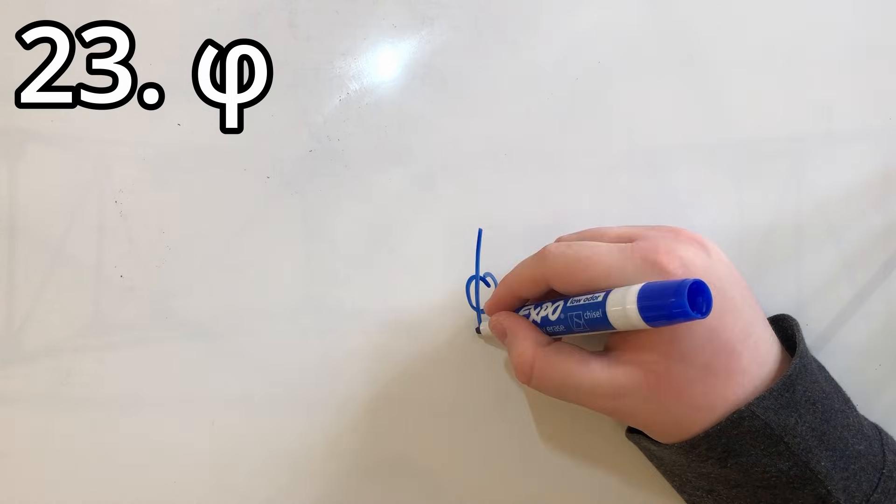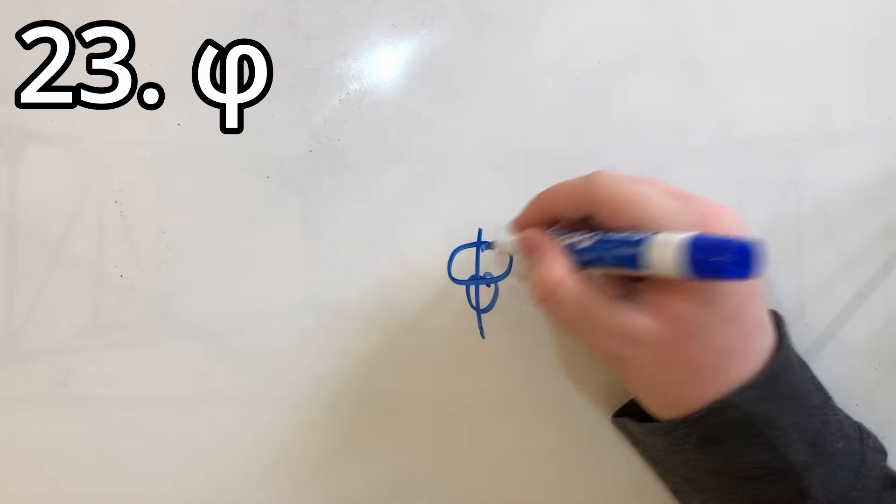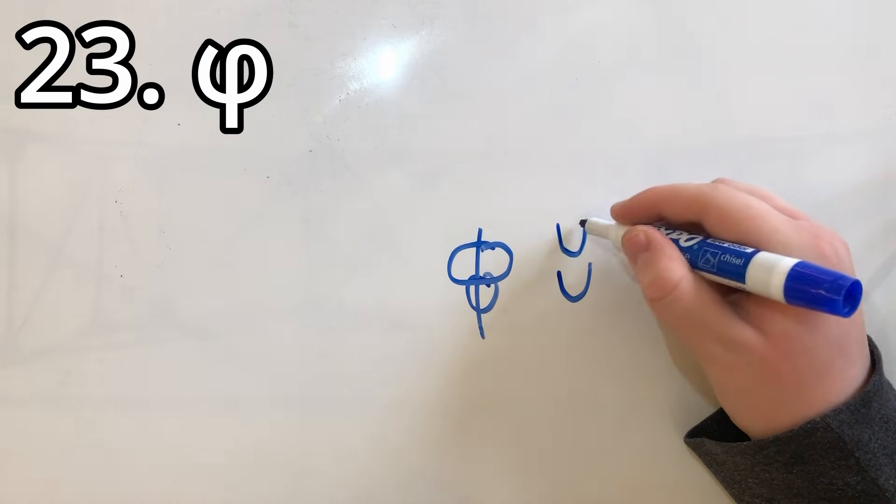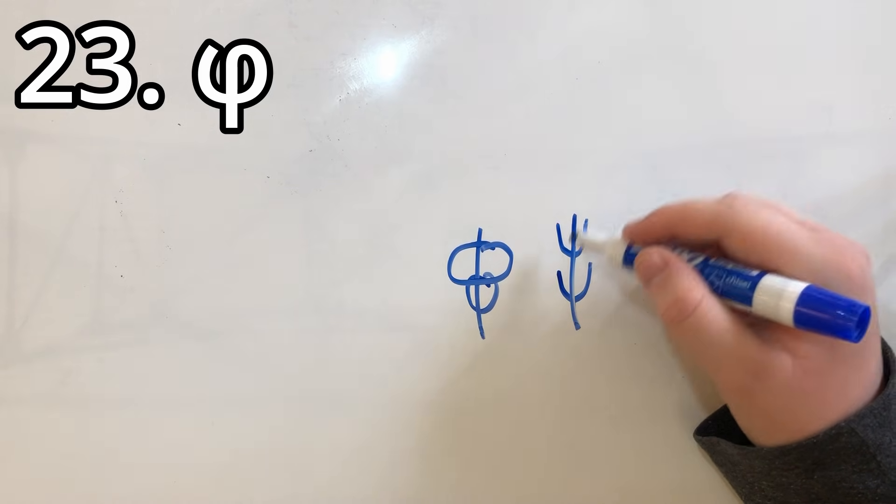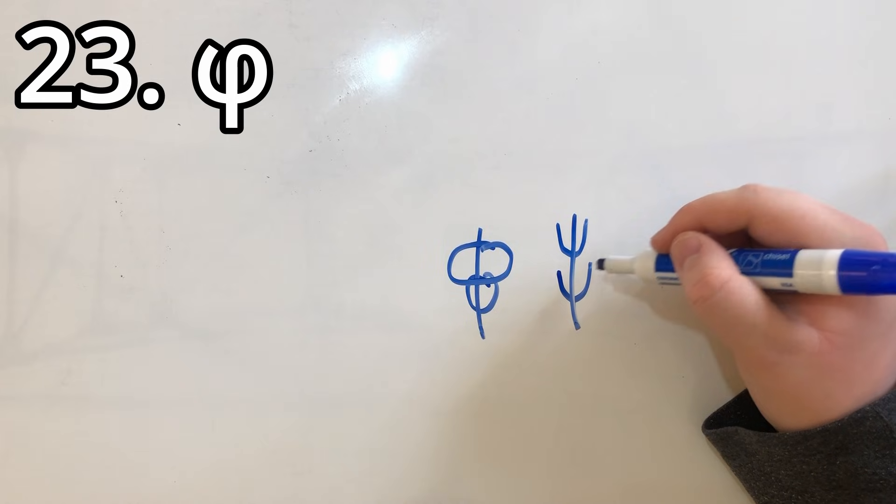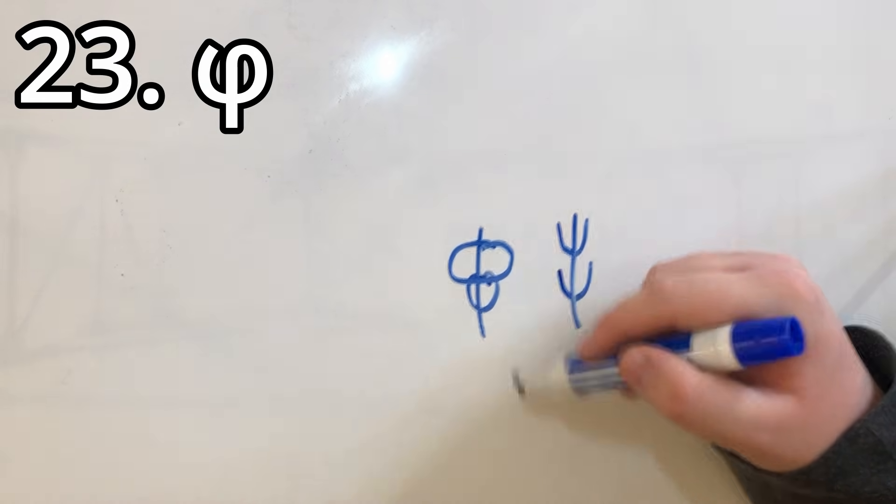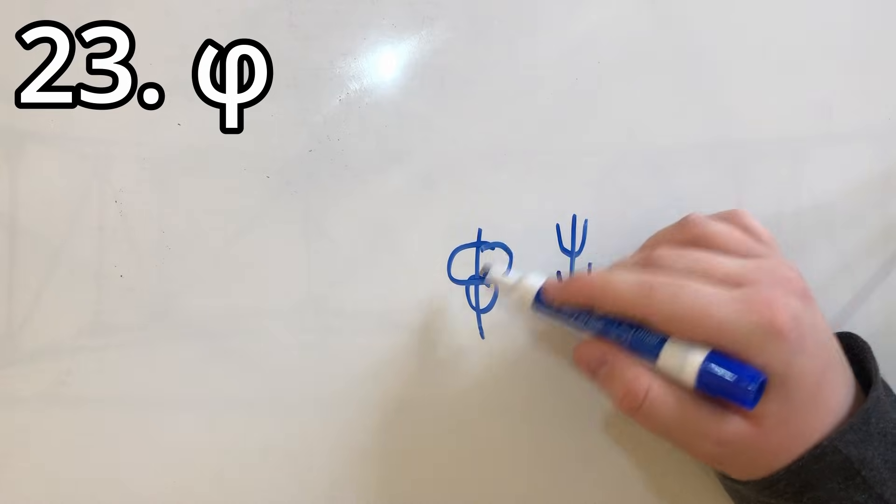Spot number 23 goes to phi. It's even worse than Psi, because with Psi, this at least looks like it could be its own symbol, albeit terrifying. But this is just a whole amalgamation of circles and the line through it, and it's very unpleasant.